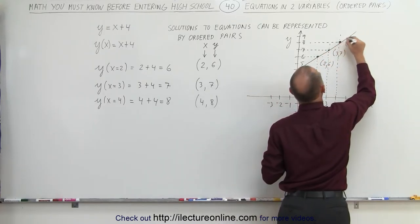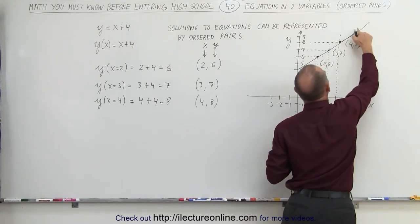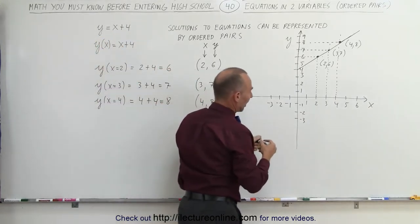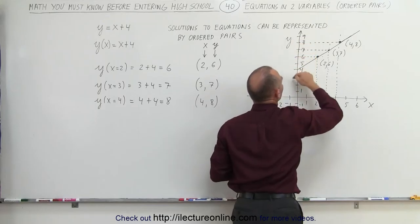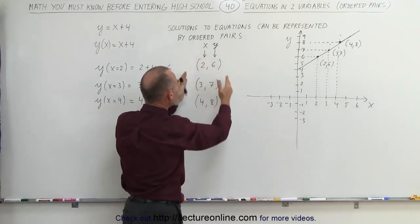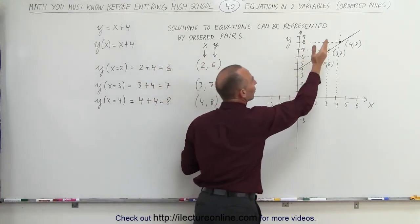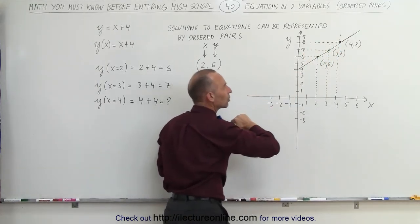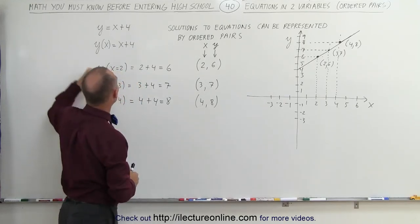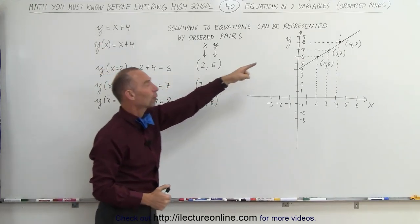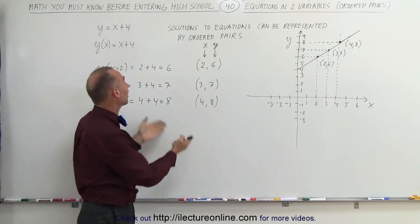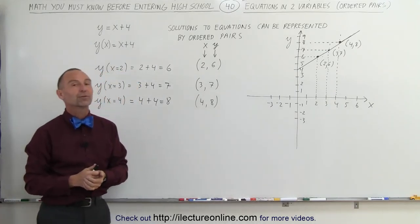Notice now that this line represents a solution to the equation y equals x plus 4. A particular value for x will have a particular value for y — the value of y depends upon the particular value for x. When you put ordered pairs on an x-y coordinate system like that and connect the dots representing those ordered pairs, you end up with a straight line. And that's by definition why this is called a linear equation — because when you plot the ordered pairs on the x-y coordinate system, you end up with a straight line. And that's what we mean by ordered pairs representing an equation in two variables.